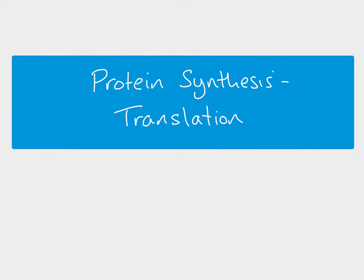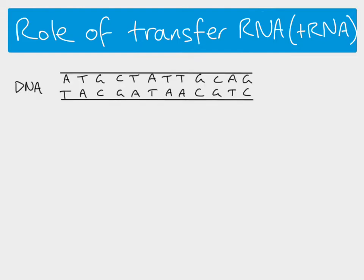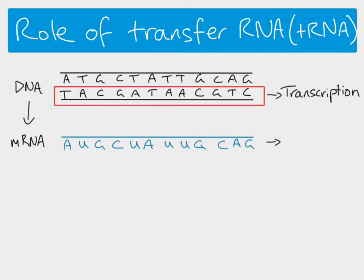We're looking at translation today, which is the second stage of protein synthesis after transcription. First, let's look at an overview so we can understand the role of transfer RNA before we see the details of how translation works. We start with our double-stranded DNA molecule in the nucleus, and one of those strands is transcribed to give us messenger RNA. The messenger RNA is then translated — that process involves the ribosome reading the sequence of bases on the messenger RNA and producing a protein.